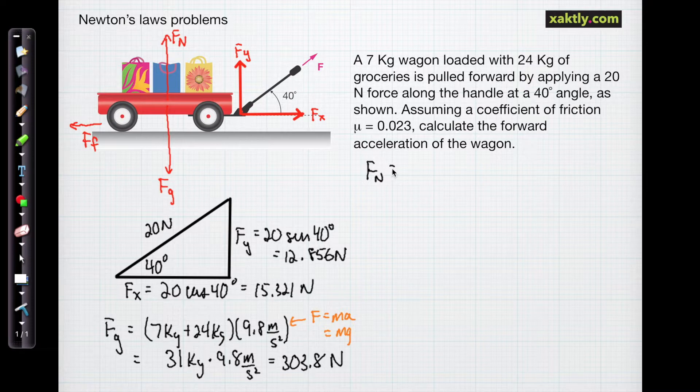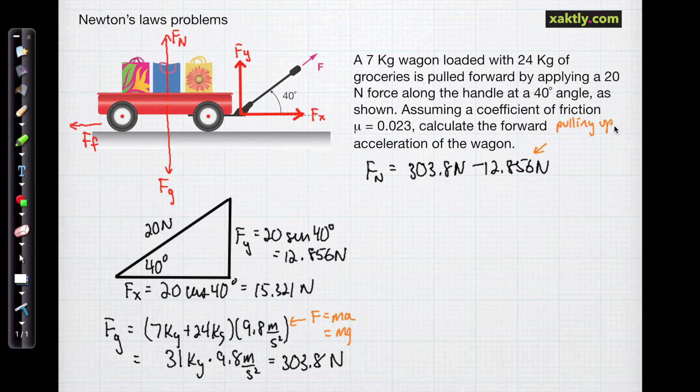Now the normal force is just the force that the ground applies upward to the wagon, and that's going to mirror that force of gravity, 303.8 newtons. We'll have to subtract though the upward force that we're putting on the wagon, 12.856 newtons. So we get a total normal force, that's the difference of those two vectors, and that resulting force is 290.9 newtons.